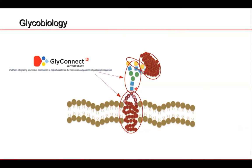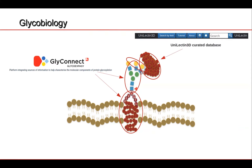Our other resource is Unilectin, again a curated database of glycan binding proteins. Lectins are a particular type of glycan binding protein that have a non-catalytic binding domain and reversibly bind glycans. They're involved in recognition events, and the recognition is for this glycosylation pattern found on the top of a glycan.